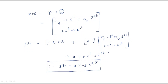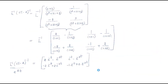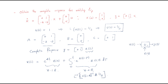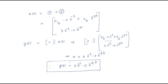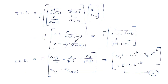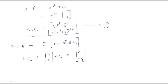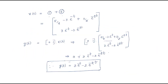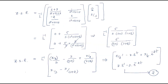Whenever a problem is given with a unit step input, we use 1/s because U(s) = 1/s. We find the modified matrix, apply the formula to get the zero state response, add it to the zero input response to get the complete x(t), and then compute the output y(t). I hope all of you understood this session. Thank you.